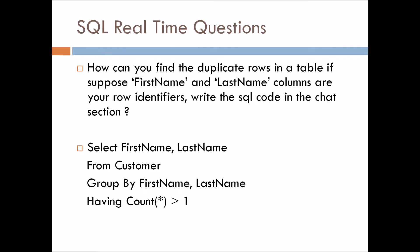Let's have the solution. This is the query that you should write: SELECT first_name, last_name FROM customer GROUP BY first_name, last_name HAVING COUNT(*) > 1. This query will give you the duplicate records where first name and last name are acting as your row identifiers. In this way you can answer this question or write the code in the chat.